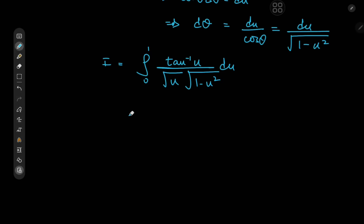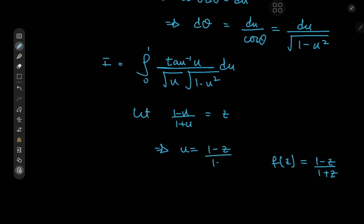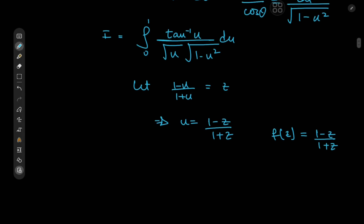So what if we try letting 1 minus u divided by 1 plus u equal to z? This has the benefit of the function being self-inverse. The function f(z) defined as 1 minus z divided by 1 plus z is its own inverse. That means whatever rule we have for z in terms of u is the same thing we have for u in terms of z. So that's how the 1 plus u, 1 minus u, and the u terms will sort out, and the differential element is pretty easy to calculate under these circumstances as well.